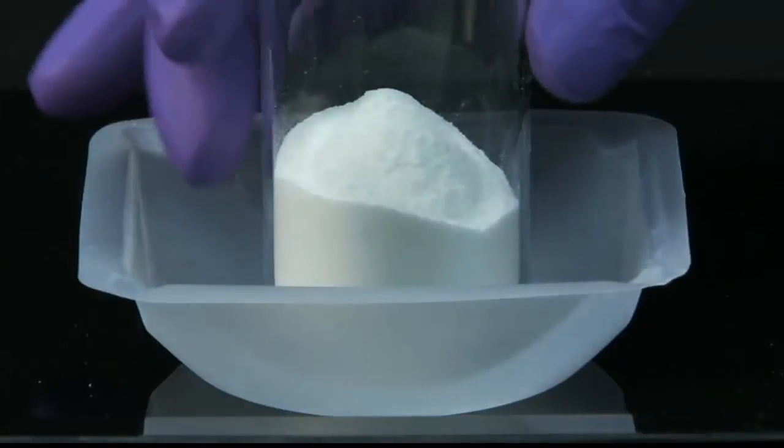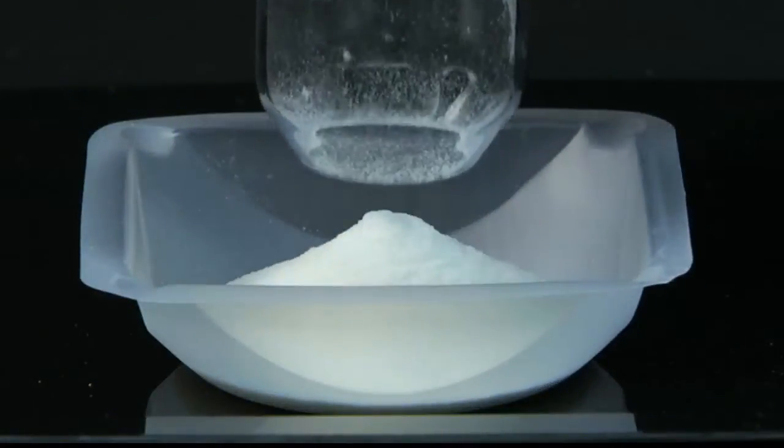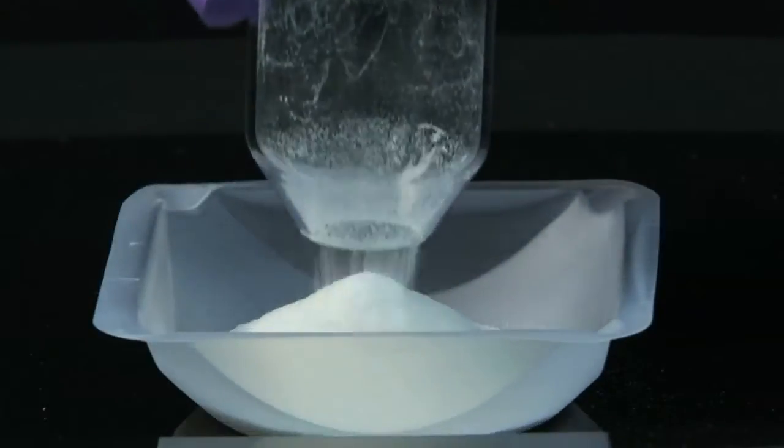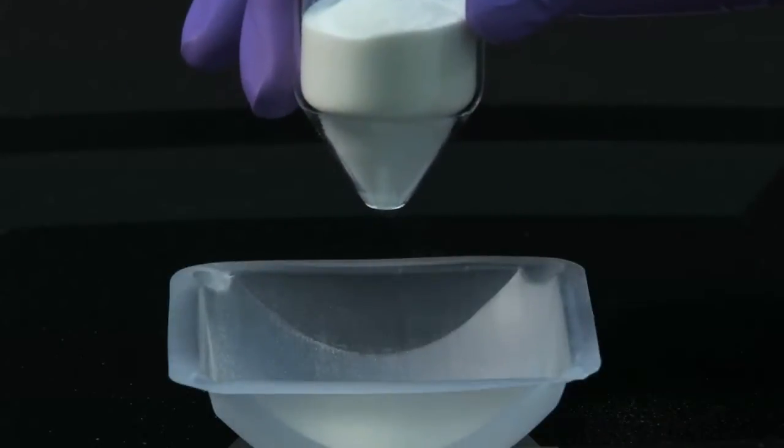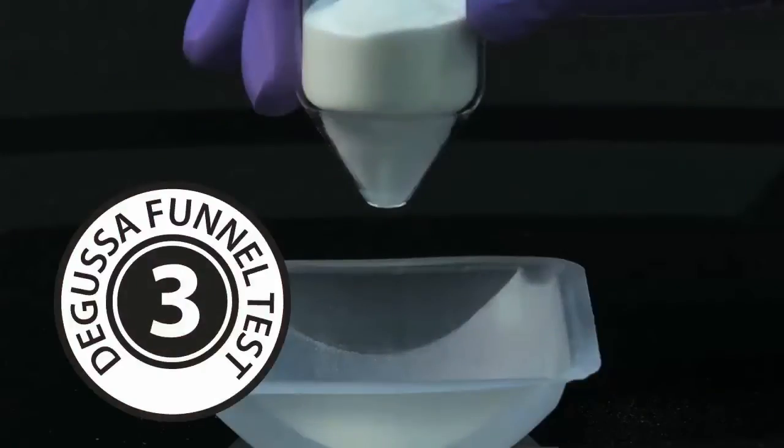This Hypermelos flows freely through cylinders 6, 5, 4, and 3, but stops flowing at cylinder 2. The test protocol assigns this grade of Benicel Hypermelos a score of 3, the last cylinder through which it flowed freely.